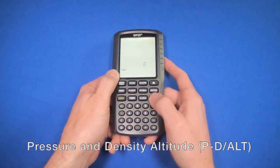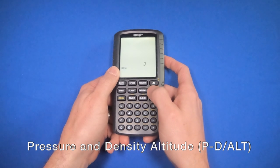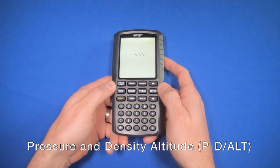I can scroll down to the P-D/ALT option where it's flashing and hit enter. Now I can enter my parameters.